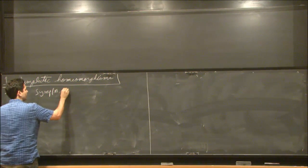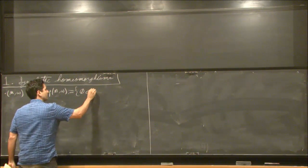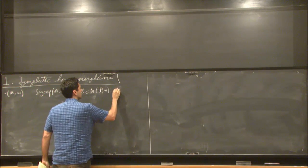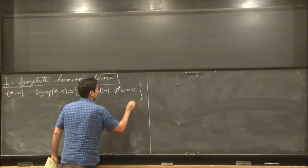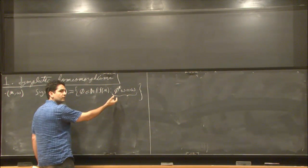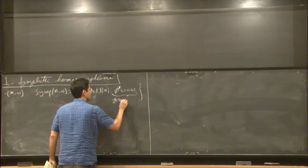So symplectomorphisms of a symplectic manifold, as you could guess, are those diffeomorphisms of M which preserve the symplectic structure. And so what's important to note here is that to write down this equation, you need the map to have a derivative. Otherwise you wouldn't be able to pull back a form. So this is a property of d phi.